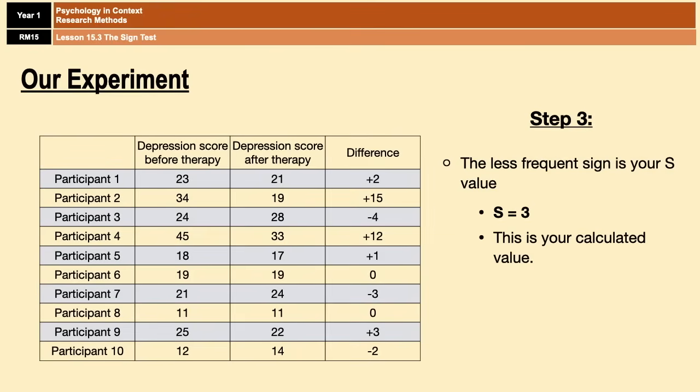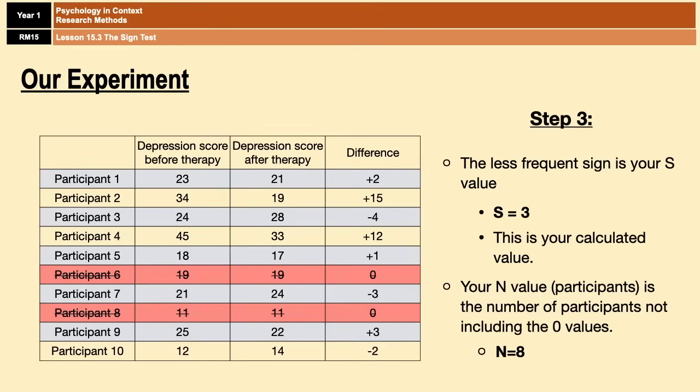Step three is finding the least occurring sign. In our case the least occurring sign is minus because it occurs only three times. That means that our calculated value of S is three. Now another value that we're going to need going forward is our N value which is the amount of participants that we have. On first glance we have 10 participants because it says so in the table right there, but if you remember we have to discount all of those with a difference of zero. Like I said before, they are for all intents and purposes deleted from the study and so actually our N value is 8 not 10 because we have to discount the two where the difference was zero.